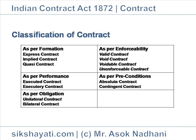Voidable Contract: a contract which is enforceable by law at the option of one or more of the parties, but not at the option of the other, is a voidable contract. Example: X, under threat from Y, is forced to draw a promissory note in favor of Y. Such a contract is voidable at the option of X; X may refuse to honor the promissory note. A voidable contract is yet undecided — it may subsequently become valid if accepted, or void if rescinded.